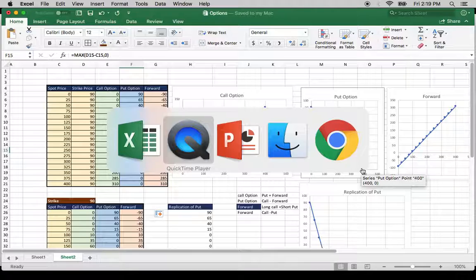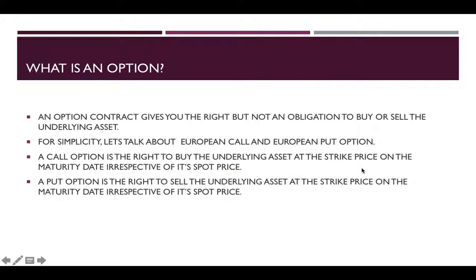So to summarize: an option contract gives you the right but not an obligation to buy or sell the underlying asset. A call option is the right to buy the underlying asset at a strike price on a certain maturity date, irrespective of the spot price, and it protects you against the price going up. A put option is the right to sell the underlying asset at a strike price on a certain maturity date, irrespective of the spot price, and it protects you against the price going down. I hope it is clear. Thank you.